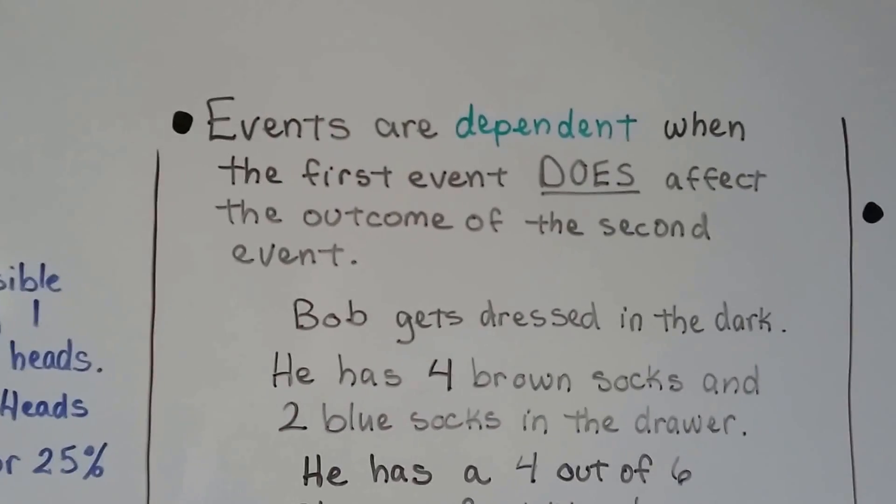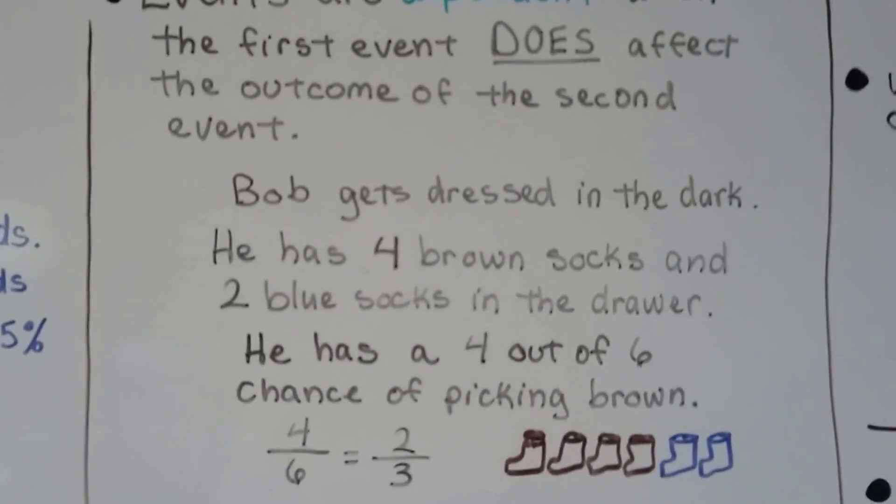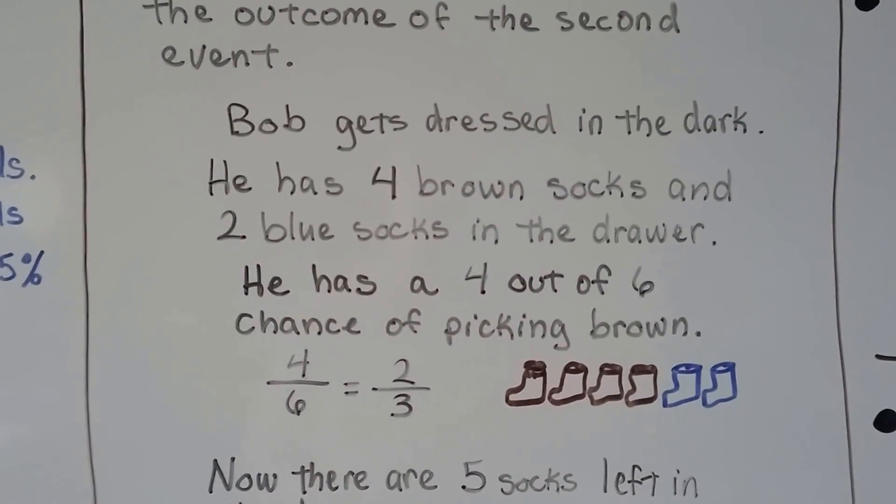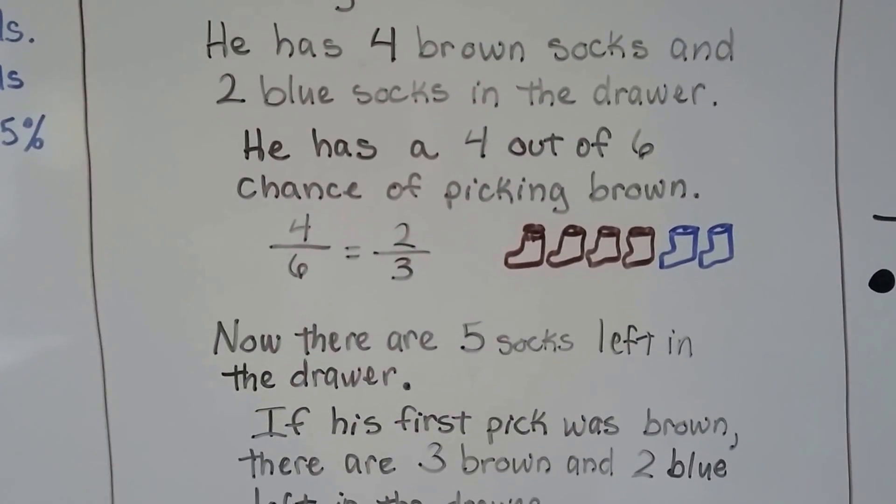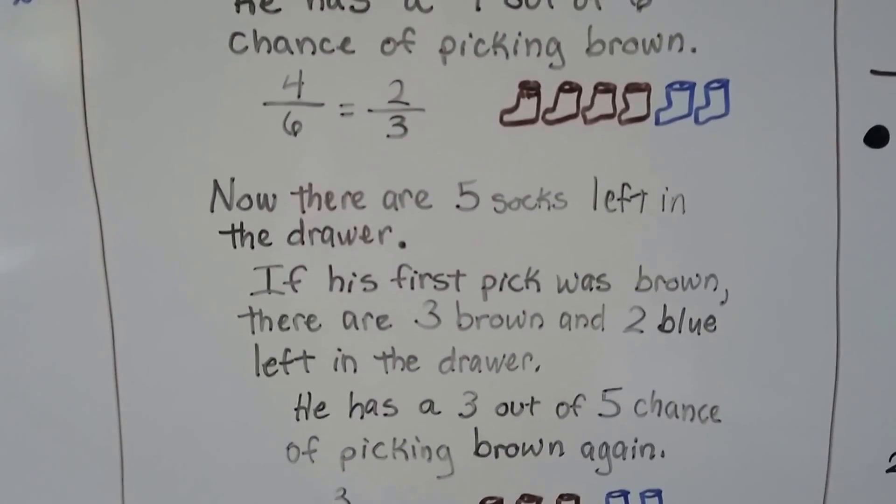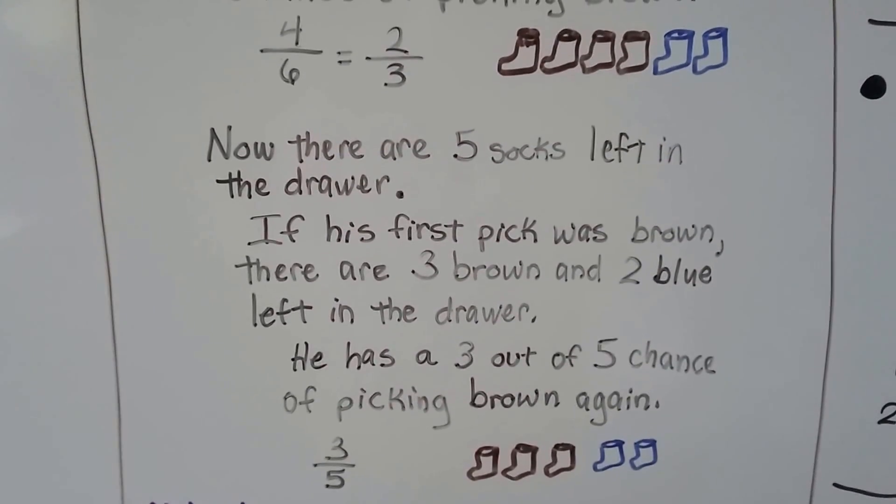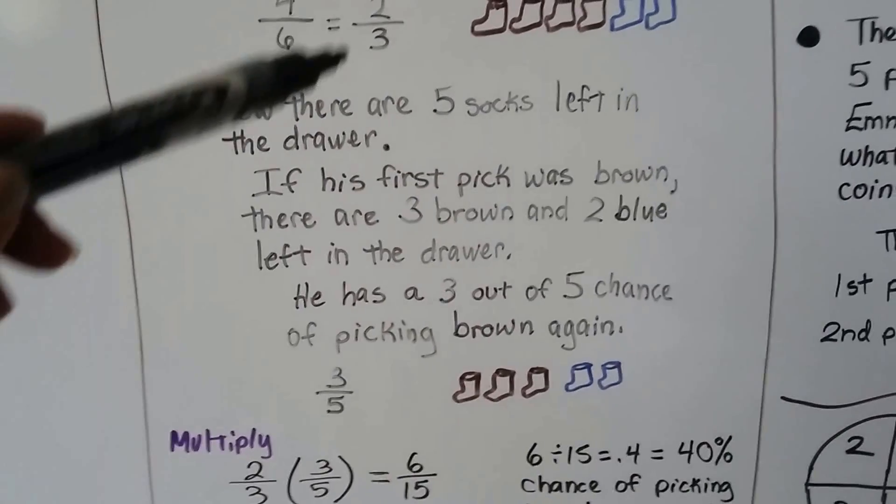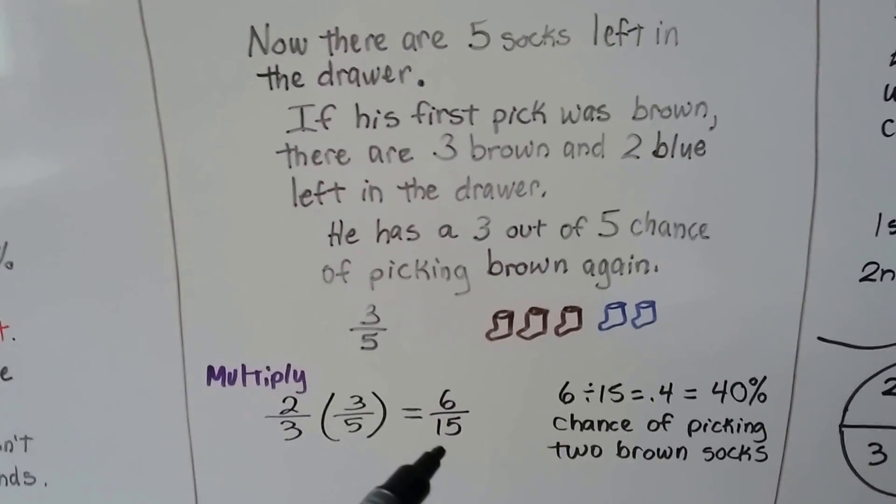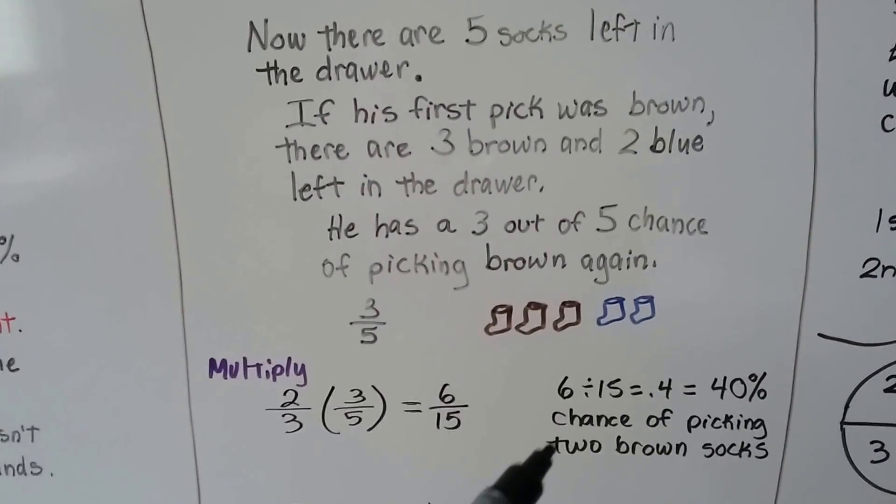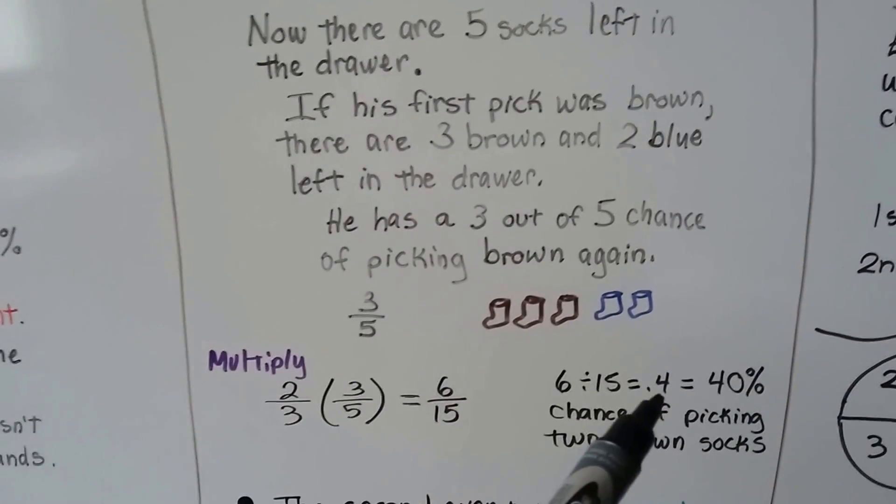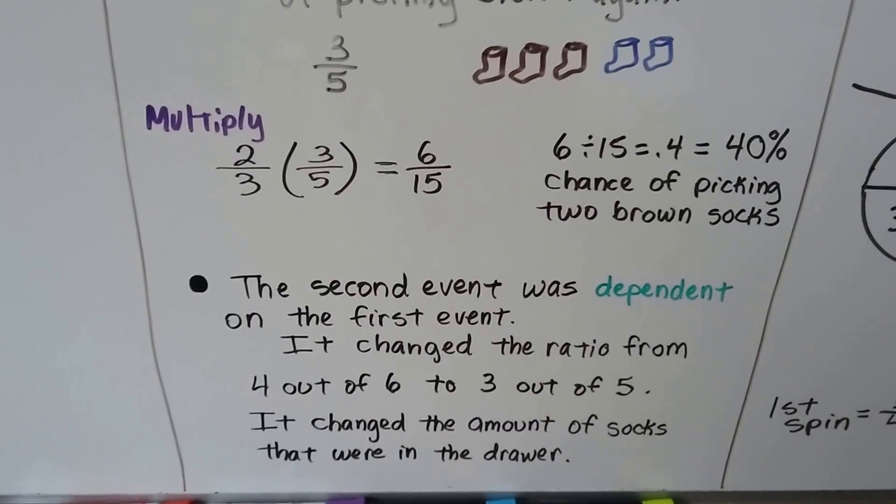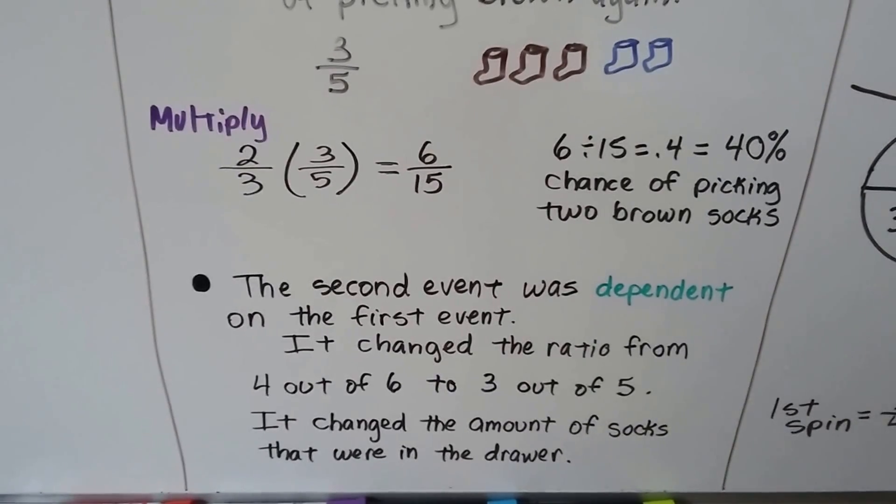Events are dependent when the first event does affect the outcome of the second event. So let's say Bob gets dressed in the dark and he has four brown socks and two blue socks in the drawer. He has a four out of six chance of picking brown. There's a total of six socks, so he's got four out of six chance. That can be reduced to two-thirds. So now there are five socks left in the drawer. If his first pick was brown, there are three brown and two blue left in the drawer. Now he has a three out of five chance of picking brown because we took one of the browns out. It's three-fifths of a chance. We can multiply this two-thirds by this three-fifths and get six-fifteenths. And that's as a fraction. We can change this to a decimal or a percentage by doing six divided by fifteen. We get point four or forty percent chance of picking two brown socks. So the second event was dependent on the first event. It changed the ratio from four to six to three out of five. It changed the amount of socks that were in the drawer.